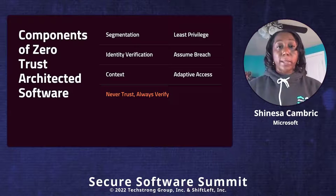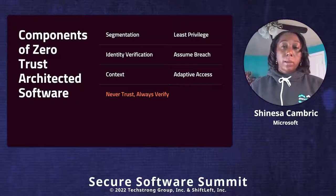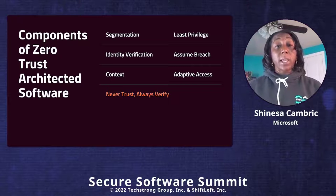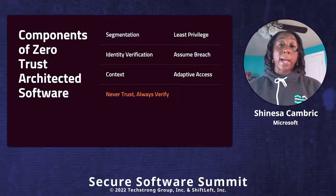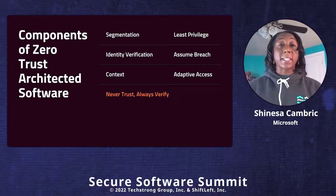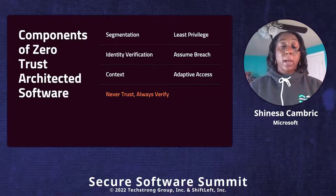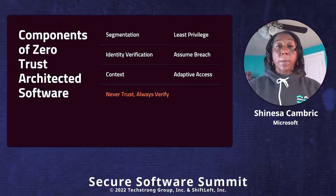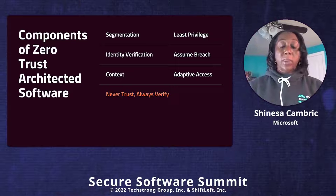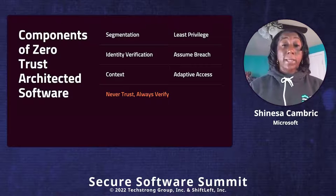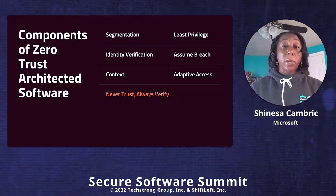Let's look at components of zero trust in the mindset of architected software. Zero trust has a really big focus on identity, segmentation, and assuming you've already been breached. In talking about segmentation, you want to look at your CI/CD pipeline and your deployment environments, making sure they're thoroughly separated and segregated in terms of who can access them. Does every identity need to have access to all points throughout your pipeline? Maybe, maybe not — but that assessment needs to be done. You want to prevent lateral movements through that pipeline by an attacker.